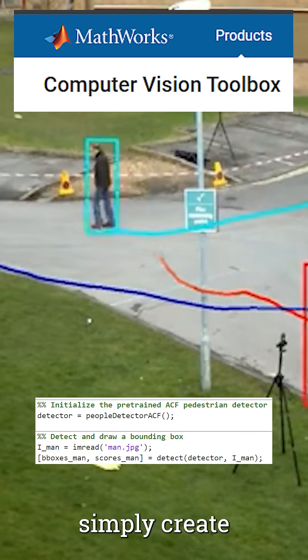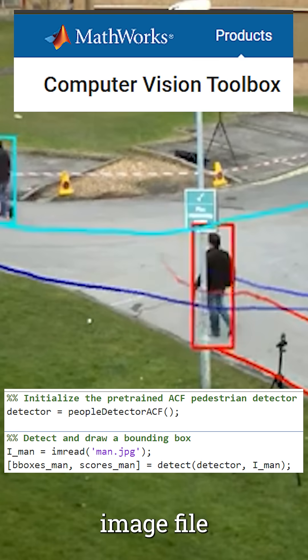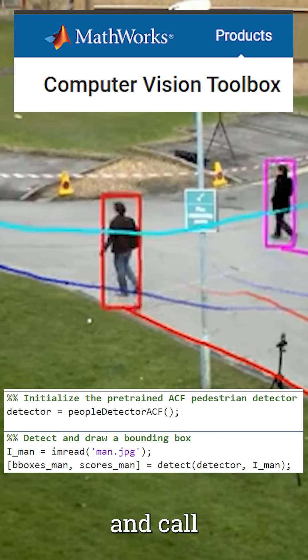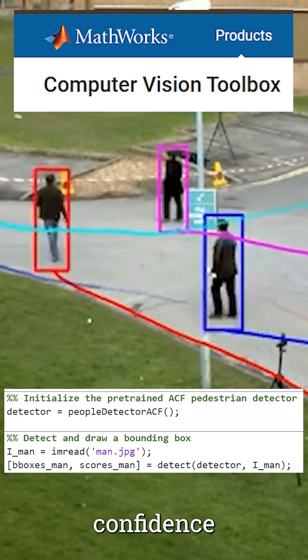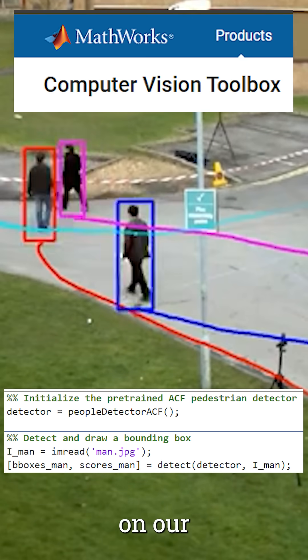In practice, we will simply create a detector object, read an image file, and call the bounding boxes and confidence score that will overlay on our image.